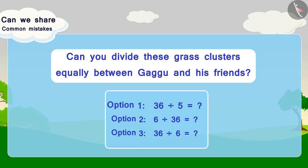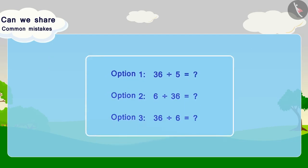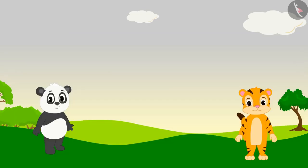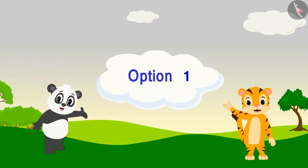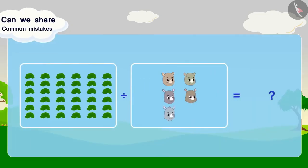Let us evaluate each option to find the right one. Let us look at option 1. We can also write this option as 5 equal parts of 36 clusters of grass equals how many clusters per friend, per part?